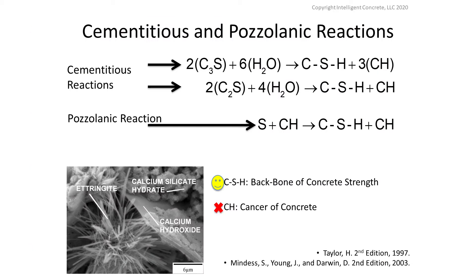What these cementitious and pozzolanic materials do — and it's important for you to understand this — is that they combine with water and the parent materials of cement, tricalcium and dicalcium silicate. They combine with water, they dissolve, they reorganize to get a calcium-to-silica ratio anywhere between 0.7 and 3.2, where they start gelling and hardening into these amorphous-like crystals, these polymers, these hardened gels that make up the backbone of concrete strength.